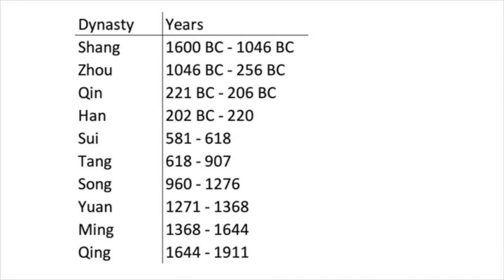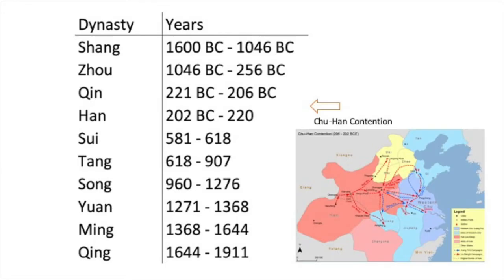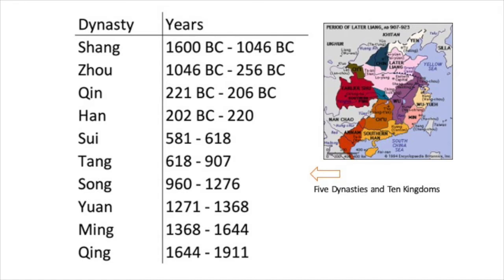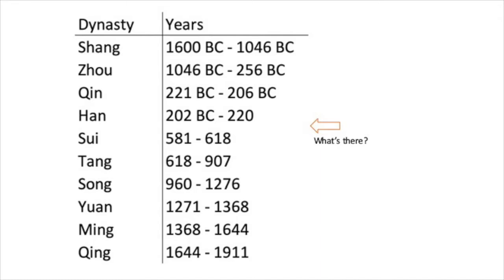However, if you take a close look, there are gaps between those dynasties. For example, there is a four-year-long war period between Qin and Han dynasties known as the Chu-Han Contention. And there is another 50-year period between Tang and Song, known as the Five Dynasties and Ten Kingdoms period. But most of all, there is a huge gap between the Han and Sui dynasties. The Han dynasty collapsed shortly after the Yellow Turban uprising in the late 2nd century, and China entered a long period of fragmentation and civil wars, until the Sui dynasty reunified China in 589. But what exactly happened during this chaotic time?